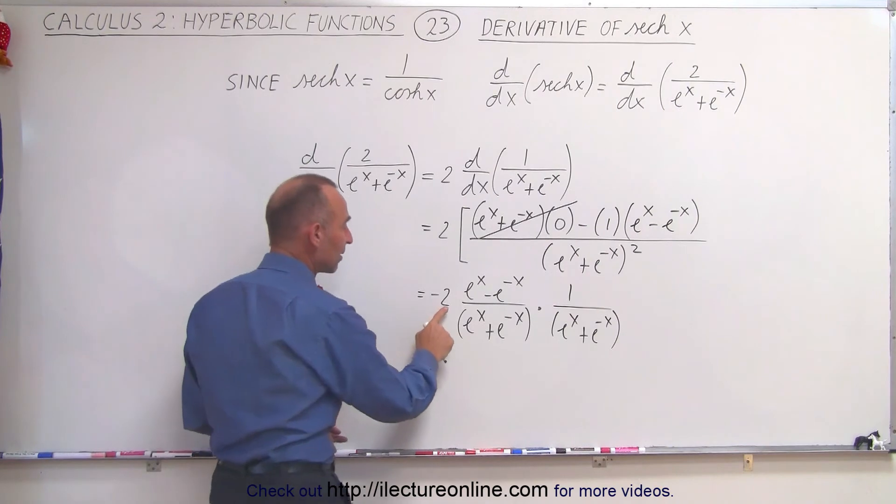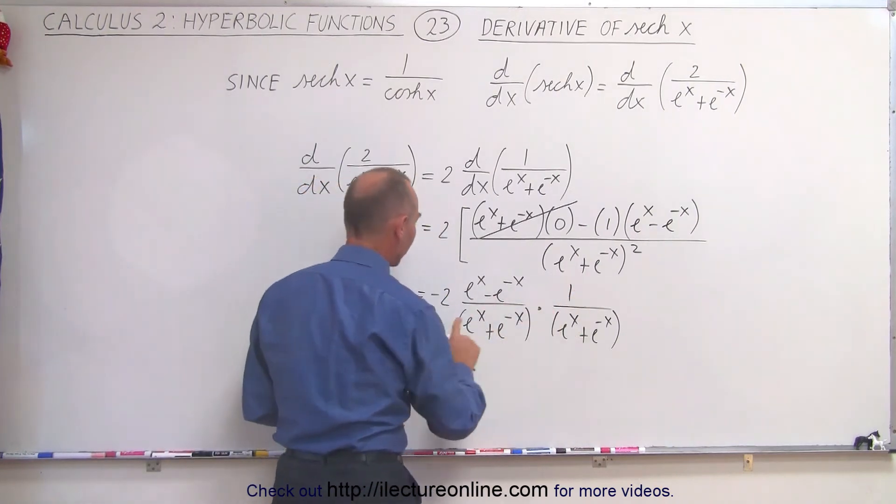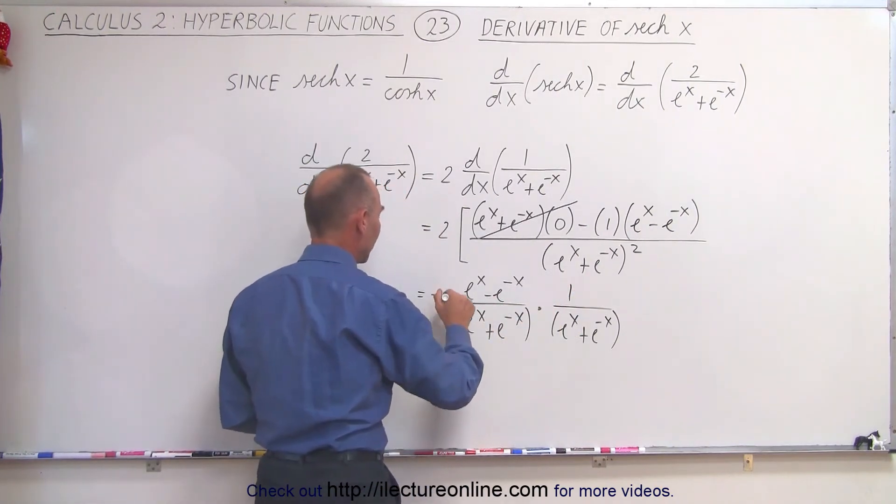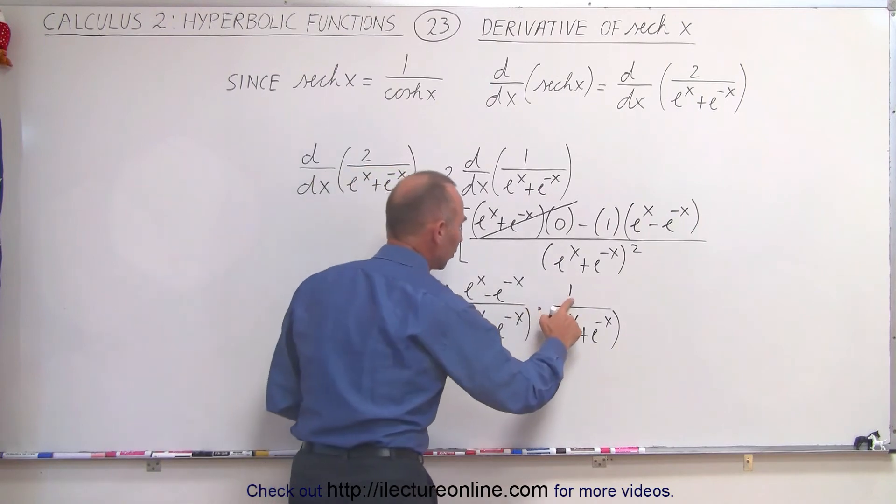But what I need to do is I need to take my 2 here and bring it back over here. So I'm going to take my 2, this is a negative 1, and put the 2 over there.